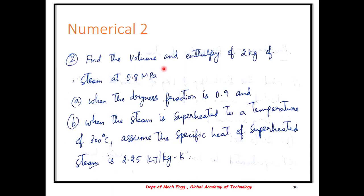We move on to the next numerical: find the volume and enthalpy of 2 kg of steam at 0.8 MPa when the dryness fraction is 0.9, and when the steam is superheated to 300 degrees Celsius. Assume the specific heat of superheated steam as 2.25 kJ per kg. In this numerical, unlike the previous one which was per unit basis, it is 2 kg. Also, the pressure is given as 0.8 MPa, which must be converted to bar.